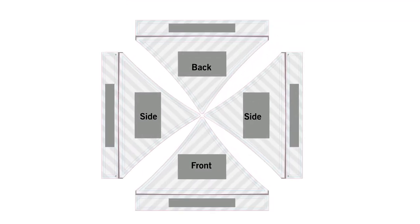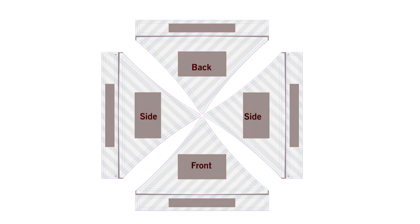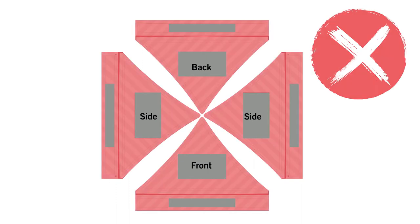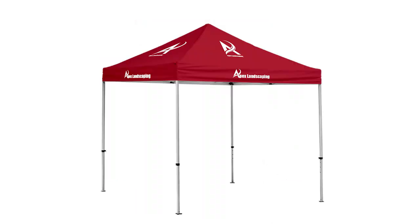Our logo printed tent allows you to print in specified canopy areas. You can design anywhere inside the designated areas; elements that lie outside these zones, which are marked with a striped pattern, will not be printed. This option is perfect for designs that consist of logos and simple text that can be placed on the peaks or valences.